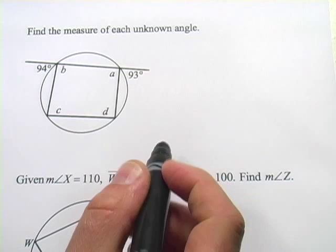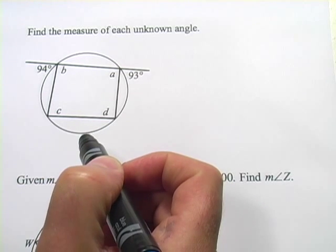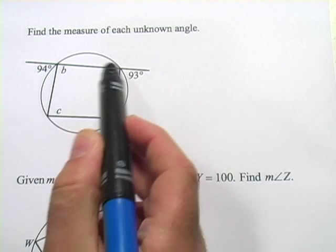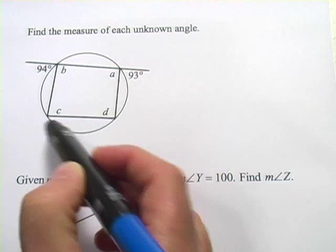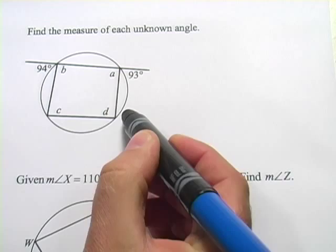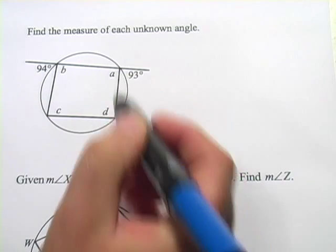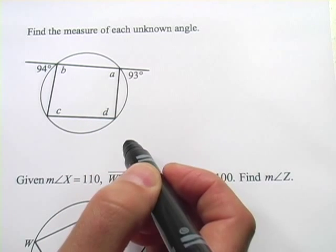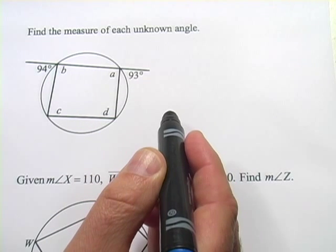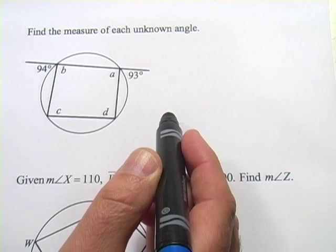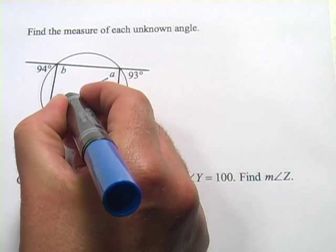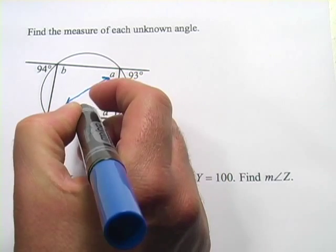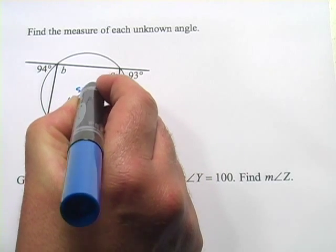In these problems, we're dealing with inscribed quadrilaterals. You take a four-sided figure and stick it inside a circle in such a way that all four vertices of the quadrilateral are on the edge of the circle. There's one rule to know here with inscribed quadrilaterals: these angles that are apart from each other are going to add up to 180, so they're supplementary.